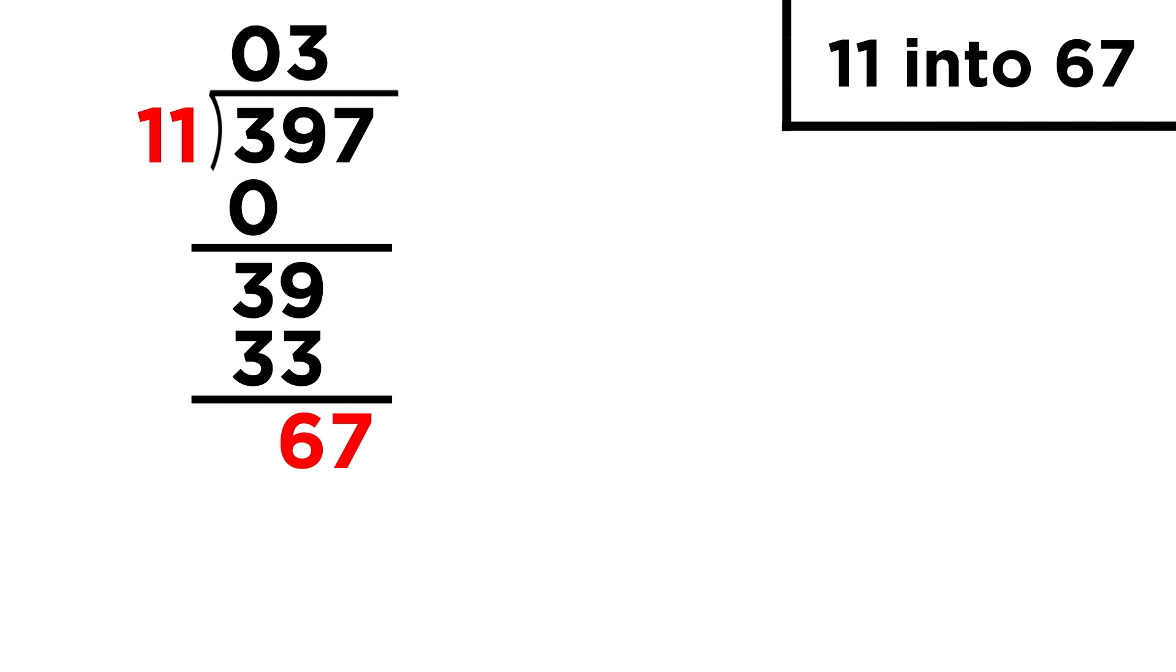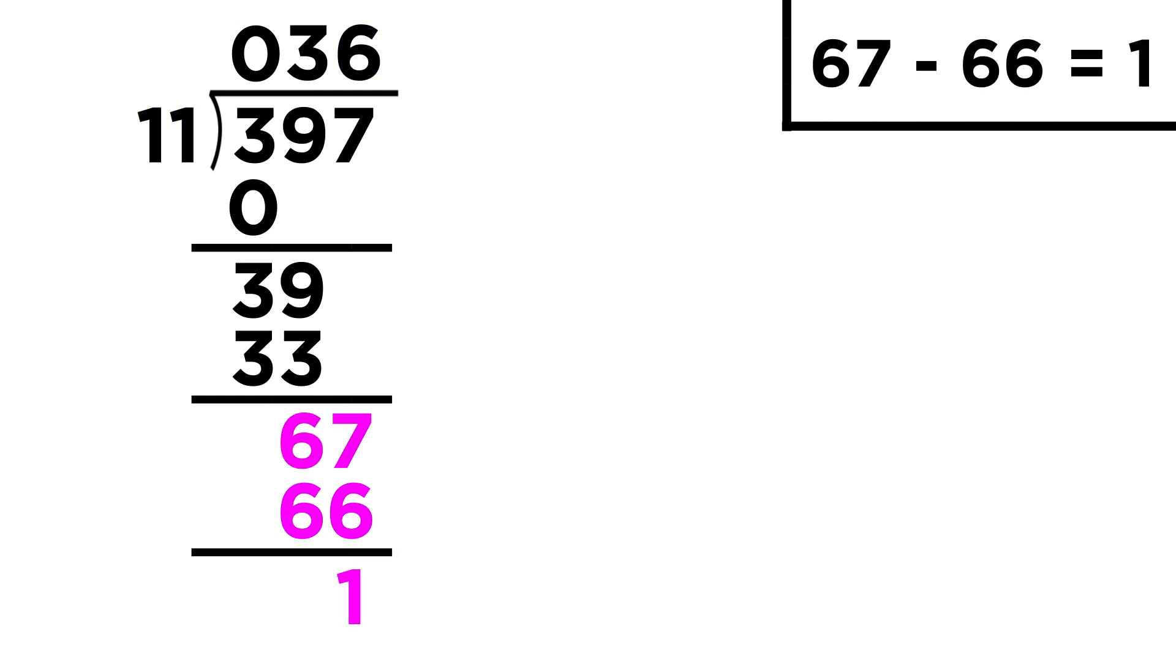Eleven fits into sixty-seven six times, so we put a six, multiply to get sixty-six, and subtract to get one. Eleven doesn't fit into one, and we've run out of digits in the dividend, so that will be thirty-six with a remainder of one.